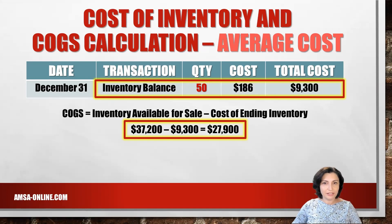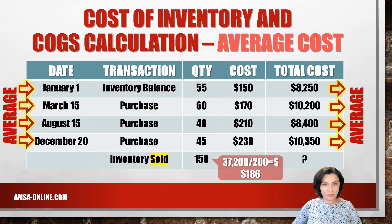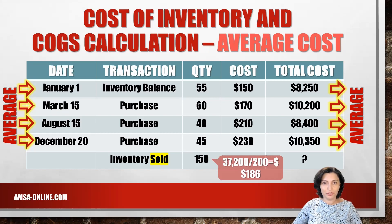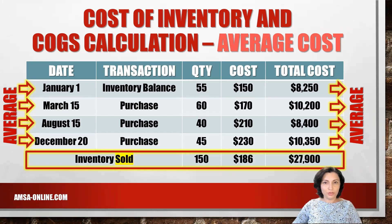Deducting the ending inventory of $9,300 from the total cost of goods available for sale of $37,200, we find the cost of goods sold to be $27,900. This is the same amount as multiplying the 150 units sold by $186 per unit. The total cost of goods sold under the average cost method is $27,900.